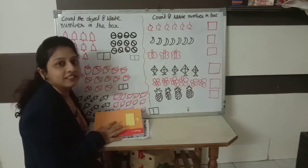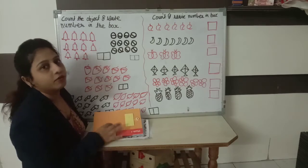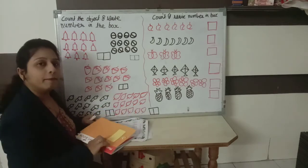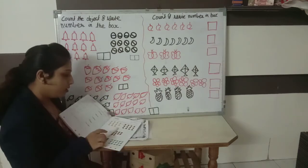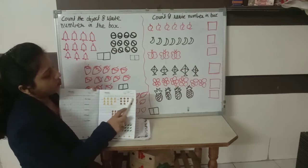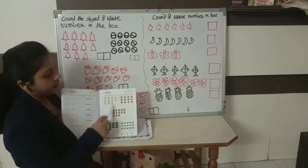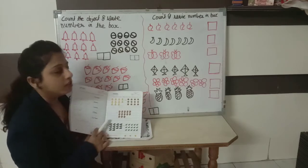Good morning children, how are you? Fine. Today we are going to learn math subject, page number 90. Count the object and write the total number in the box. Yes, okay, number 90. So look at here, okay, let's start.